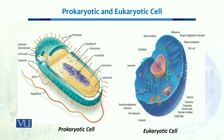Here you can see the difference between a prokaryotic cell and a eukaryotic cell. On the right side we have the eukaryotic cell, which is way bigger as compared to the prokaryote. The major difference you can see is that in the eukaryote, a well-defined nucleus is present inside.